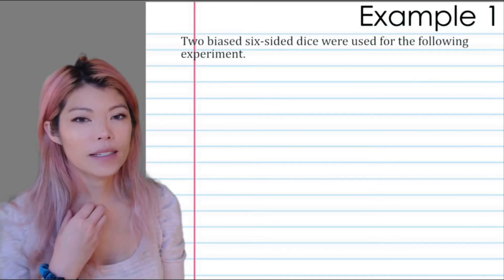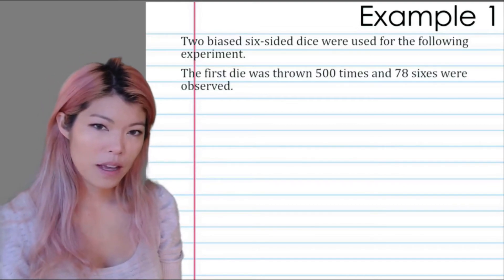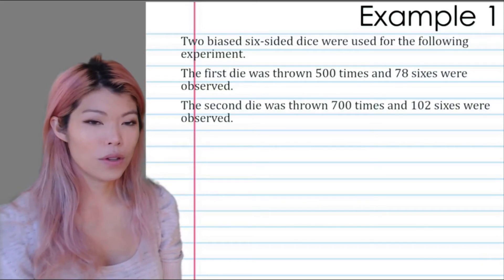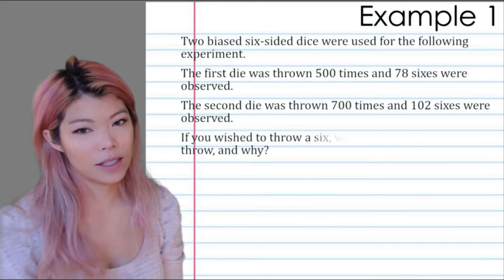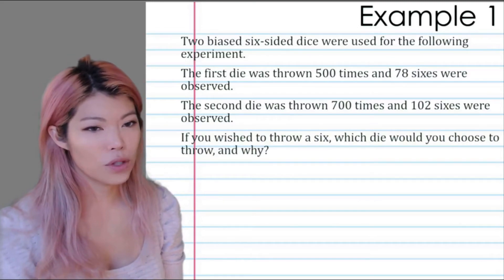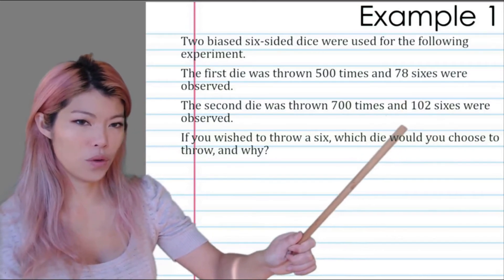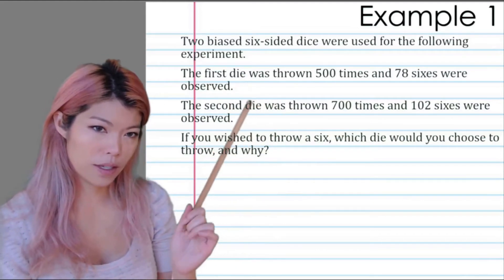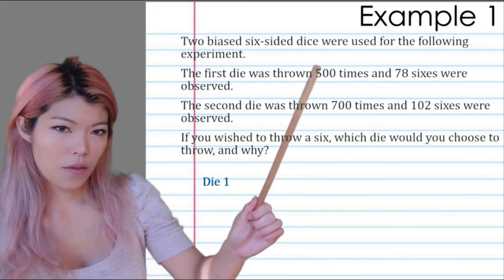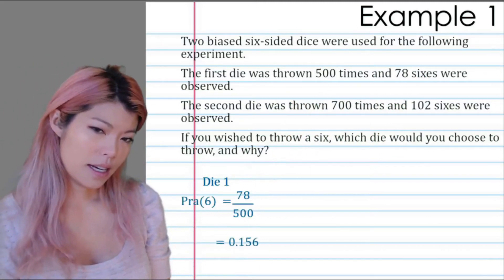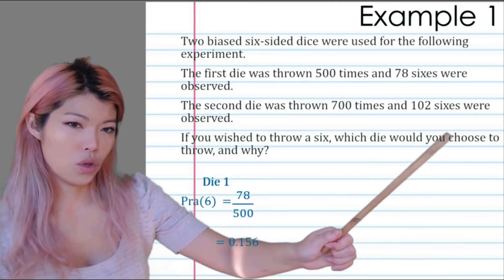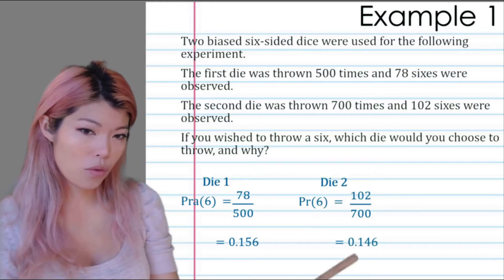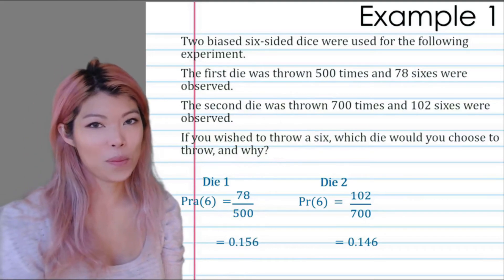Example 1: Two biased six-sided dice were used for the following experiment. The first die was thrown 500 times and we obtained 78 sixes. The second die was thrown 700 times and we obtained 102 sixes. If you wish to throw a six, which die would you use? Well, it sounds like there's 102 there, but we have to find the relative frequency to see which one gives us a higher probability of six. Die one: 78 over 500, that's 0.156. Die two: 102 over 700, that's 0.146. When we did the math, we can see that the first die is a better choice.